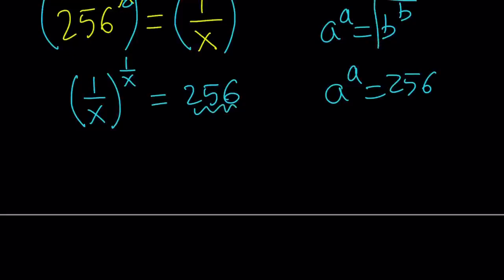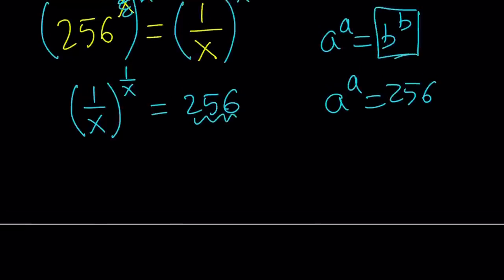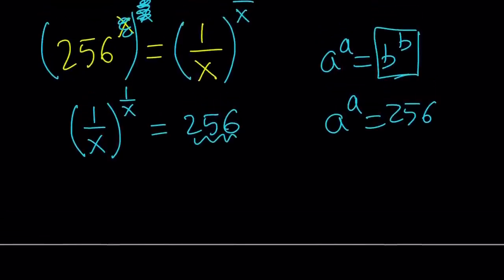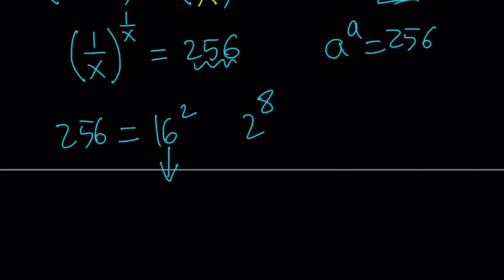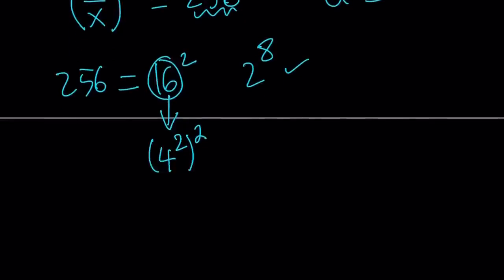256, can it be written as something like b to the power b? Think about it. 256 is 16 squared. Or maybe you already know it's 2 to the 8th. Either way. Let's play with these exponents a little bit. So 16 is 2 to the 4th. That doesn't help because it gives me the same thing as 2 to the 8th. So let's do it a little differently. How about writing the 16 as 4 squared? Yay, that seems to help. 4 to the power 2 to the power 2. That is 4 to the 4th power.